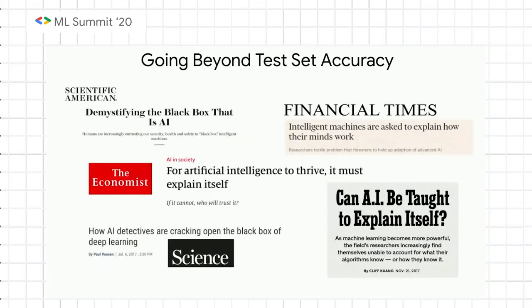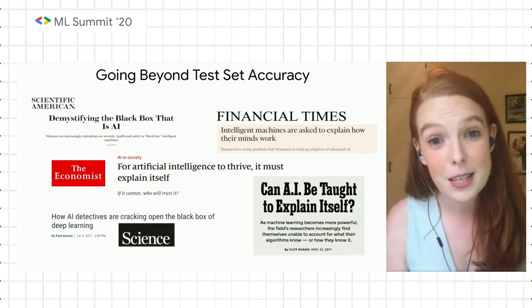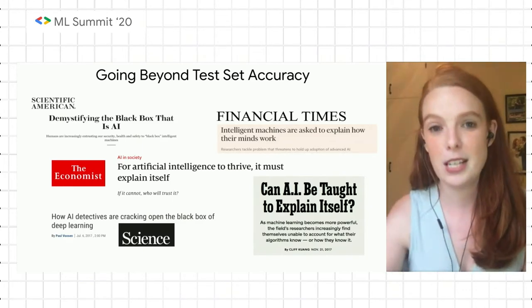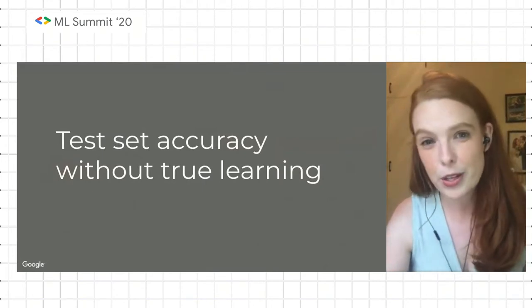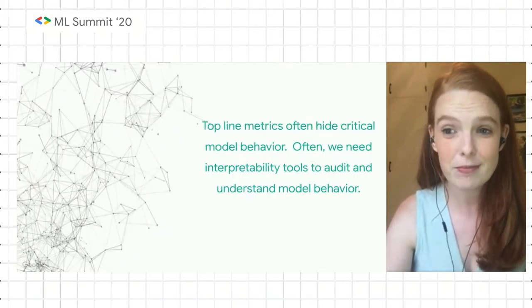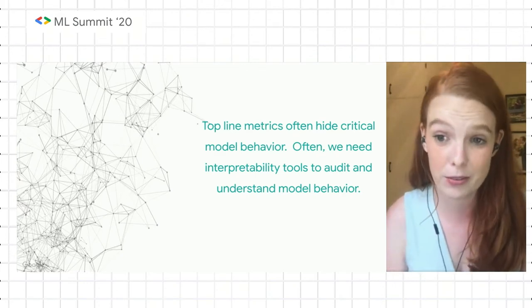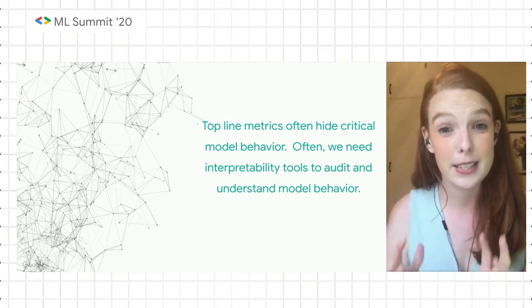In many ways, that's the beginning of this talk — by having these high-performance representations, we've unlocked a lot of use cases in the real world. But at the same time, questions remain about how can we tell what the model behavior is. This is compounded by the fact that we know there's often high tested accuracy for these models without true learning. Often these top-line metrics like top-one and top-five hide critical model behavior. And this is really the role of interpretability tools — to order and understand model behavior.